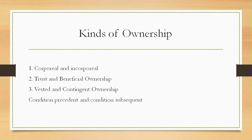Then there is condition limitation, which is a combination of condition precedent and condition subsequent. It contains a condition which divests an estate that has vested and vests it in another person. As regards the prior interest, it is a condition subsequent; as regards the ulterior interest, it is a condition precedent. Thus, a gift of a house may be made to A with the condition that if he divorces his wife, the house will go to B. As far as A is concerned, it is a condition subsequent — he gets the house immediately, subject to being divested if he divorces his wife. However, insofar as B is concerned, it is a condition precedent — A has to divorce his wife, and then the house would vest in B.